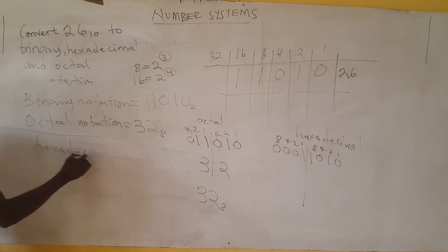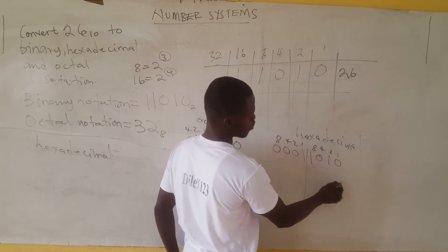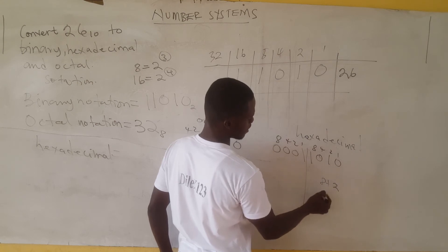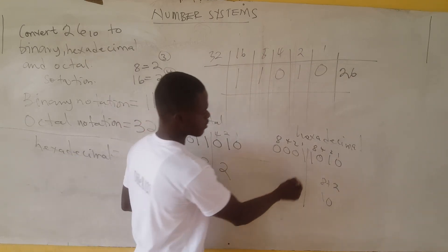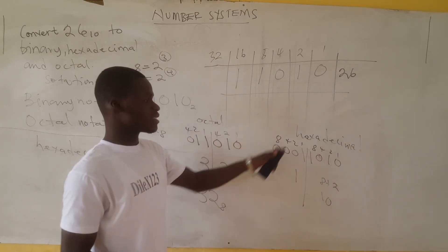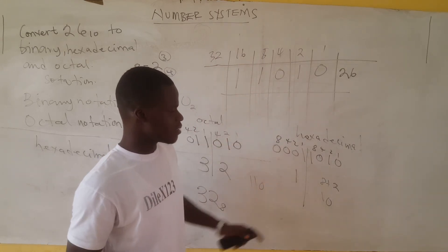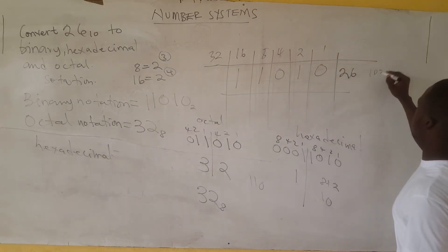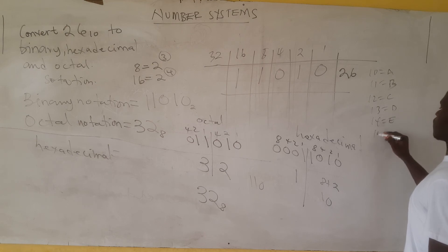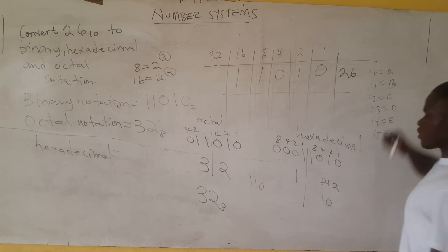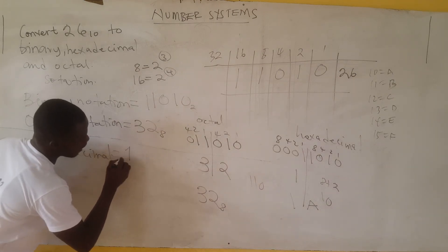Now for hexadecimal: we've already created our groups of 4 digits. Within each group, powers are 1, 2, 4, 8. For the first group: 1×2=2, 1×8=8, so 2+8=10. For the second group: 1×1=1. So we have 1 and 10. Since in hexadecimal 10 is represented as A (the speaker calls it 'A'), our hexadecimal answer is 1A base 16.